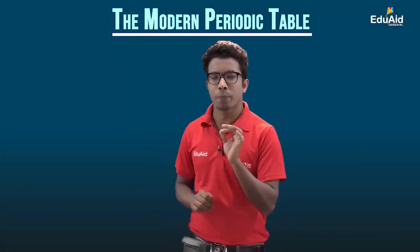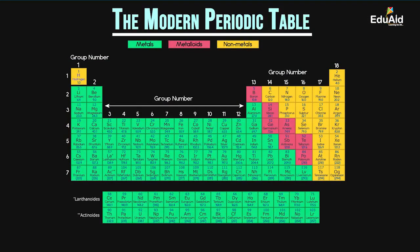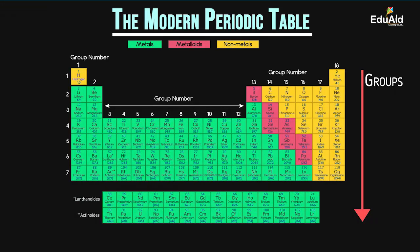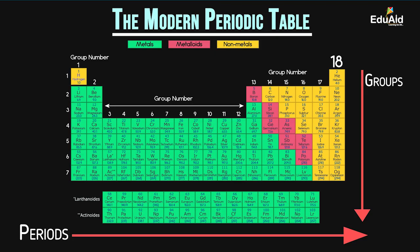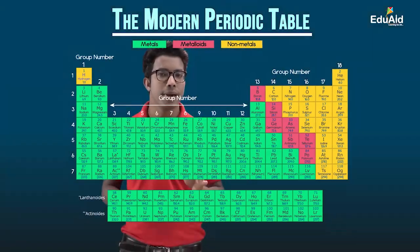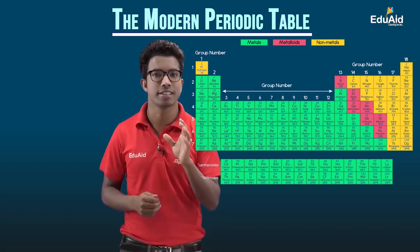Now let's discuss the specifications of the modern periodic table. In this table, elements are arranged in certain vertical columns called groups, and certain horizontal rows called periods. In the modern periodic table, there are 18 different groups and 7 different periods. Now, on what basis are elements placed in certain groups or periods? Let's discuss that.